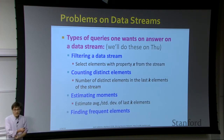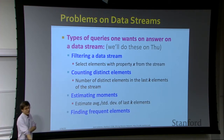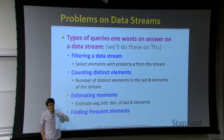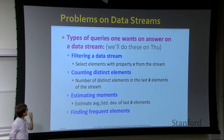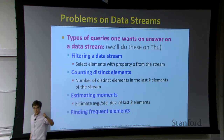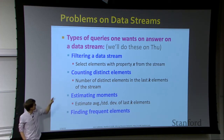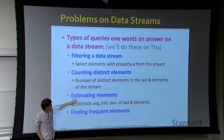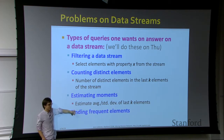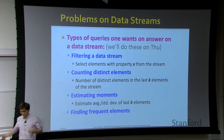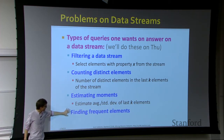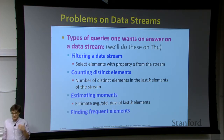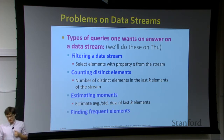On Thursday we'll talk about filtering a data stream — how to select elements with property X from the stream. This is useful but can be expensive when you have a billion different property types. We'll also talk about counting distinct elements in a stream, estimating moments such as average or standard deviation, and next week, frequent item sets and frequent elements on top of the stream.